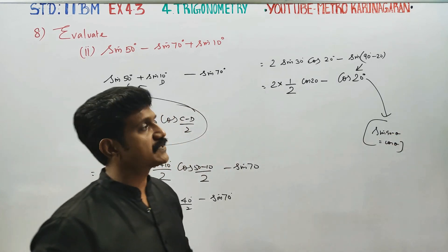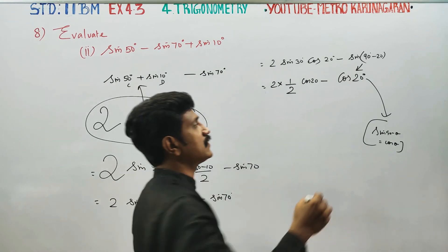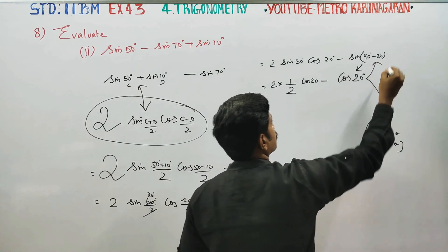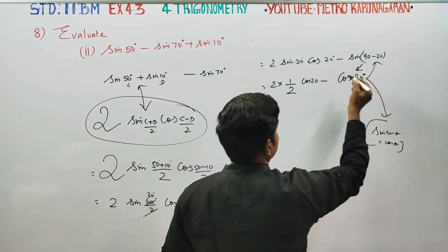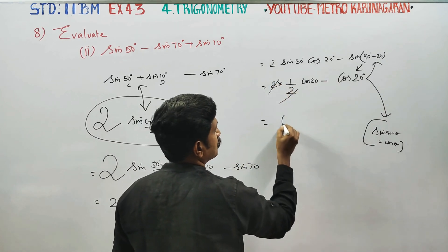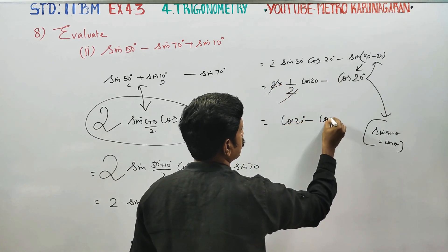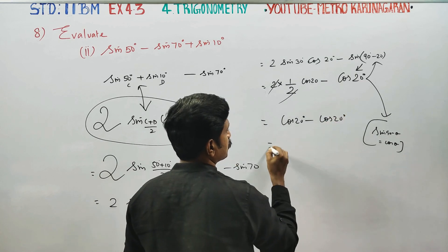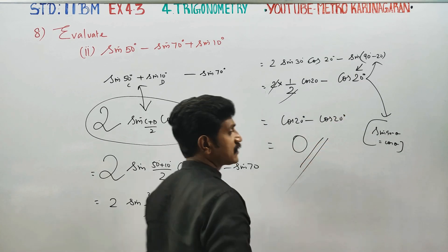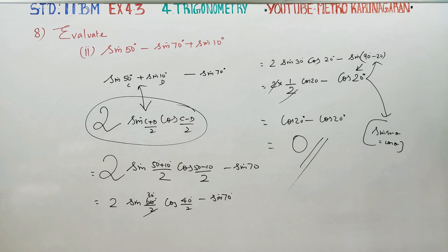Cos 20, cos 90 minus theta is sin theta. 2 will cancel already. Cos 20 minus cos 20. Your final result will be zero. Thank you.